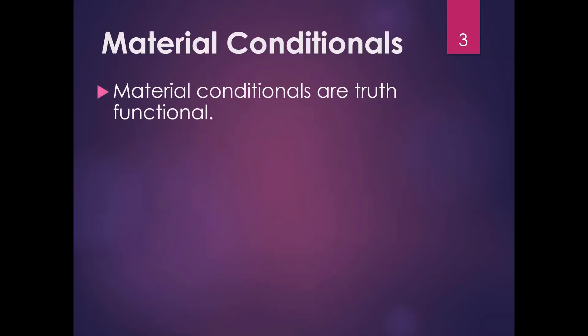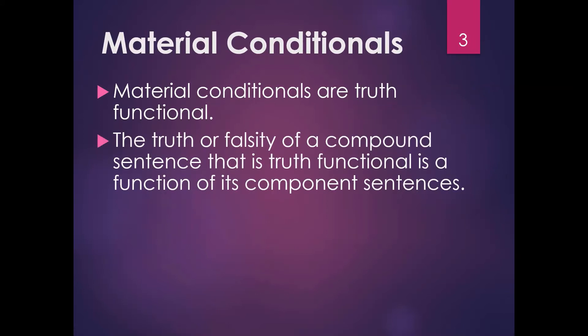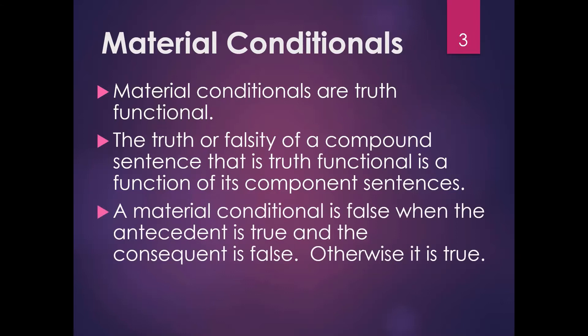Material conditionals are truth-functional. When we're doing logic and talking about material conditionals, these are truth-functional — not causal claims about one thing causing another. The truth or falsity of the material conditional as a whole is a function of the truth values of its component sentences. A material conditional is false in only one condition: when the antecedent is true and the consequent is false.